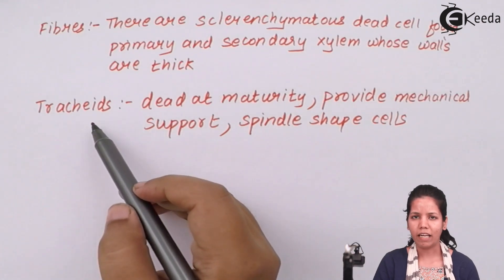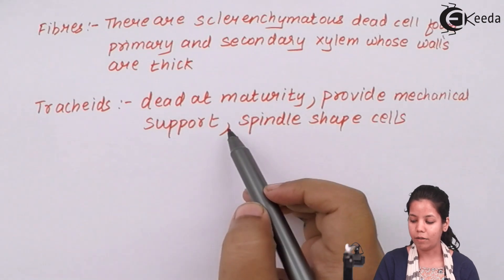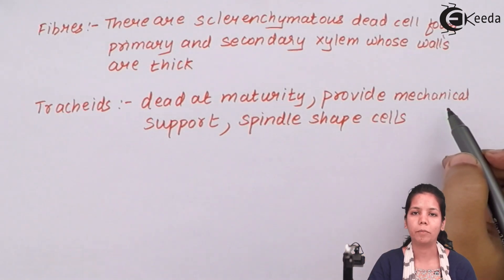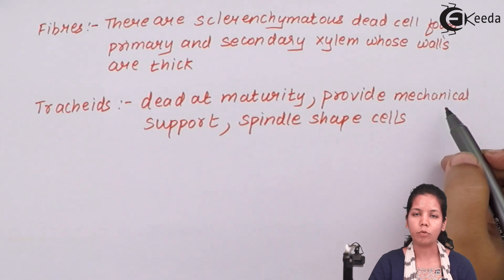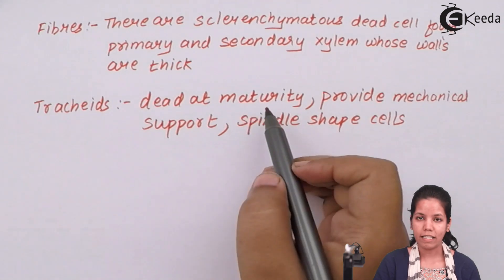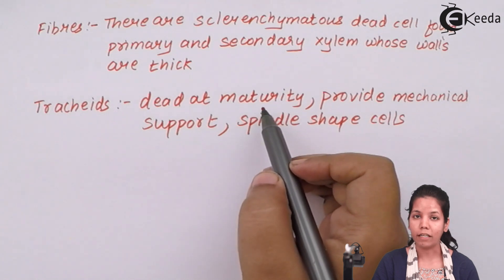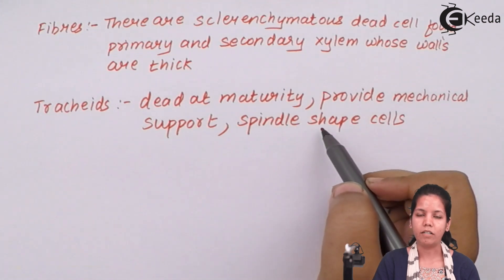Lastly, tracheids. Tracheids, along with vessels, work together. Tracheids basically provide mechanical support to the plant. Whenever conduction of water and minerals is taking place and weather conditions are not good, tracheids help to transport minerals in proper proportion, especially during drought. Tracheid cells are dead at maturity — they do not divide further at maturity. Beside that, they are spindle-shaped.